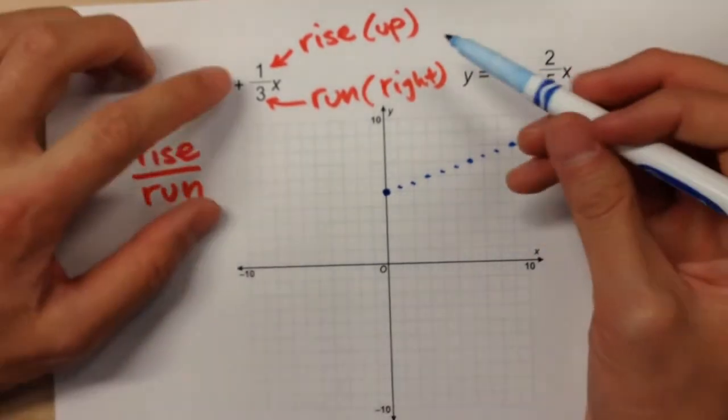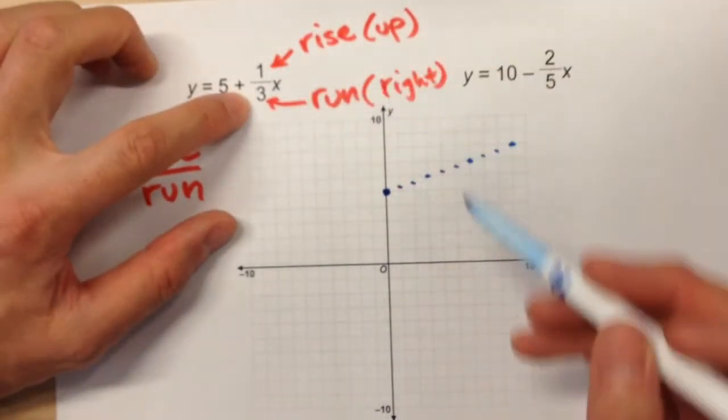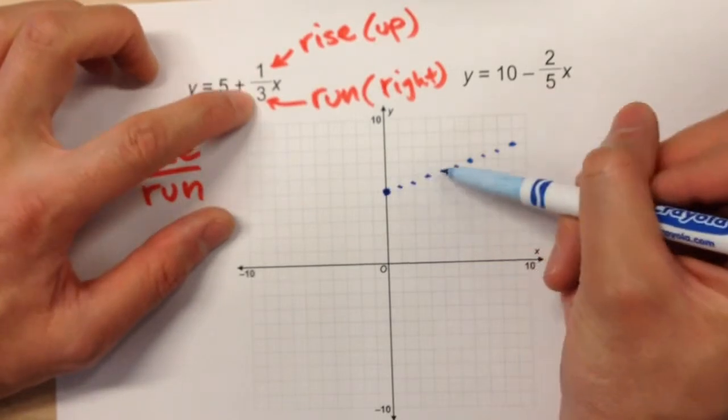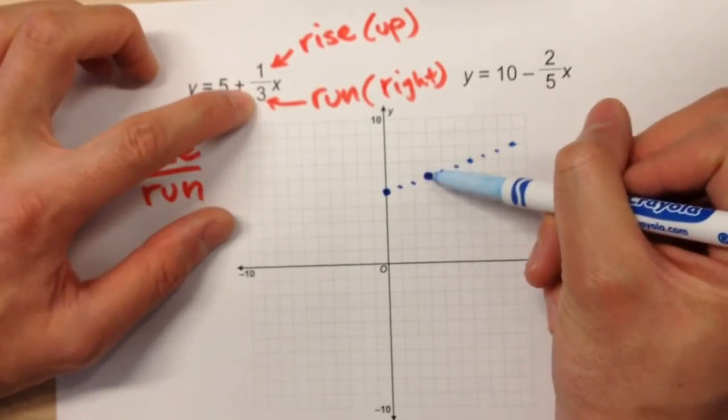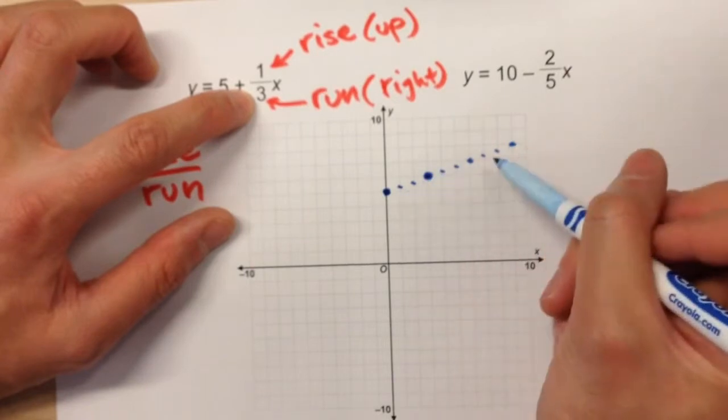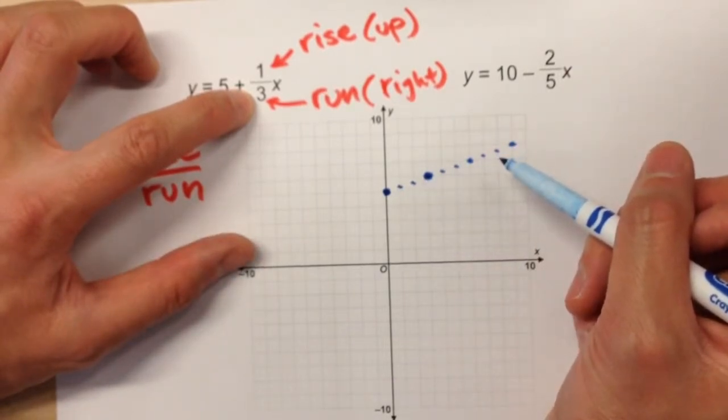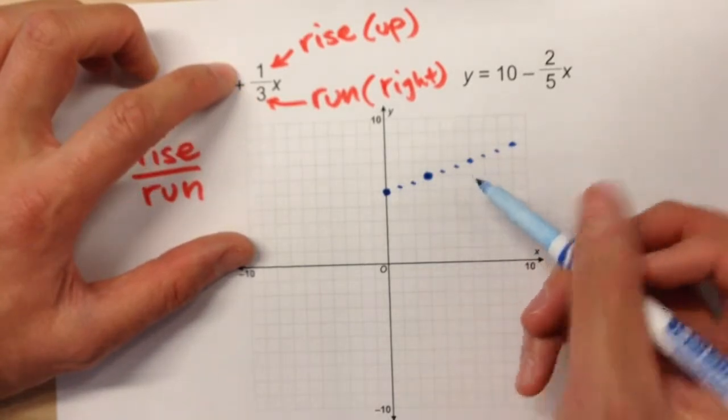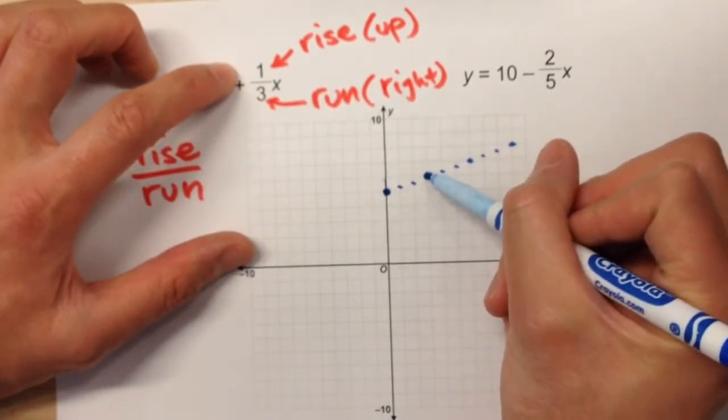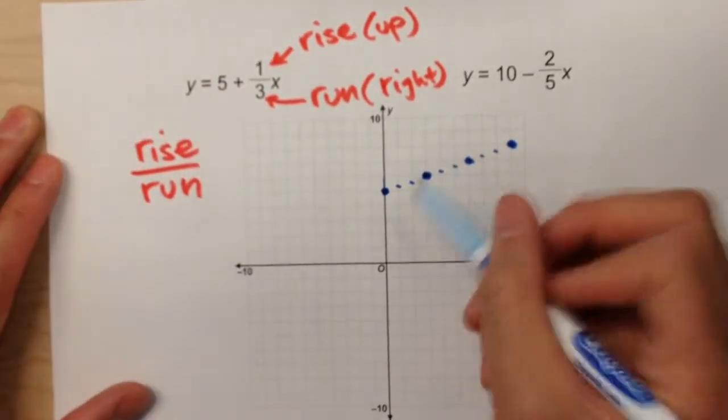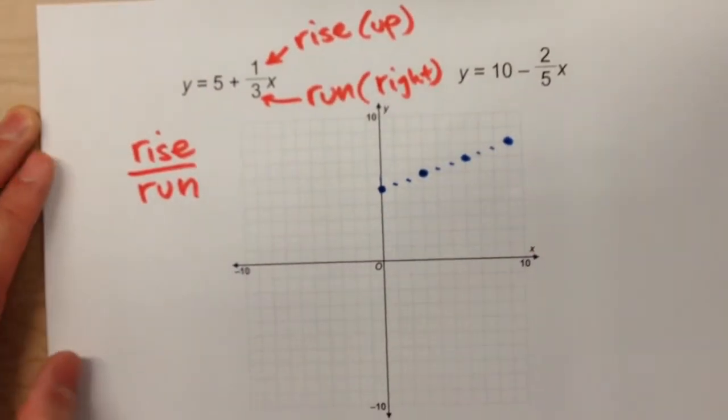So watch what we do. Instead of going up one-third of a square each time, if you just go up one, right three, you'll hit the same spot that we did by graphing one-thirds. But it'll be a lot easier because you don't have to plot every single little fraction. So up one, right three, up one, right three, up one, right three. I end up hitting exactly the same spots as I did before.